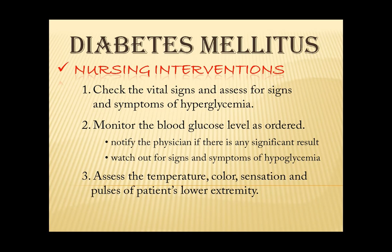Number three, assess the temperature, color, sensation, and pulses of the patient's lower extremity. This is to monitor the peripheral perfusion and neuropathy. Advise also to stop smoking or reduce, if possible, to reduce vasoconstriction and to enhance the peripheral blood flow.